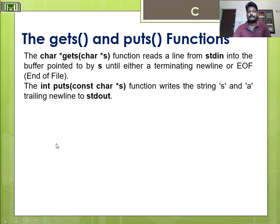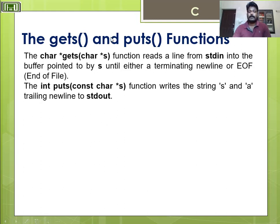Now moving to gets and puts functions. The gets function reads a line from stdin into the buffer pointed to by the variable until either a terminating newline or end of file. In the case of puts, it is just the opposite — it writes the string and a trailing newline to stdout. The difference from getchar/putchar is that getchar/putchar handles one character, while gets/puts reads or writes an entire line.